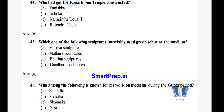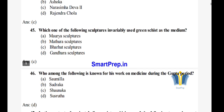Question 46: Who among the following is known for their work in medicine during the Gupta period? Options: A) Shomila, B) Shudraka, C) Shanku, D) Sushruta. The right answer is option D, Sushruta.